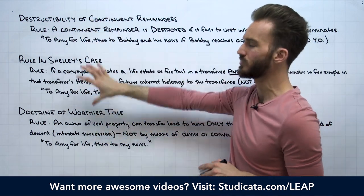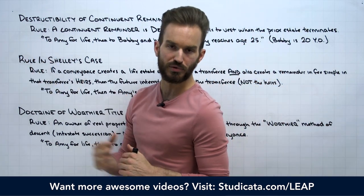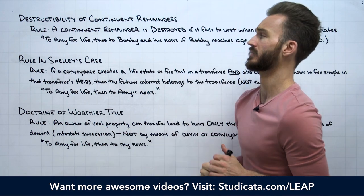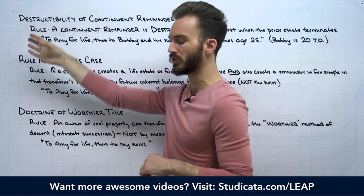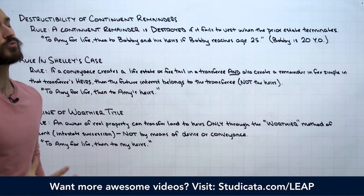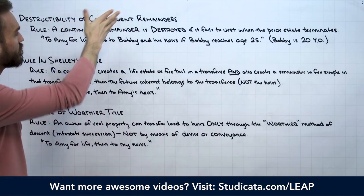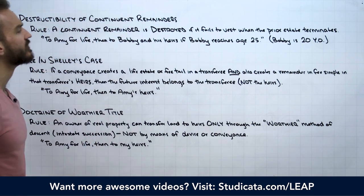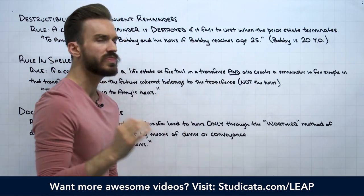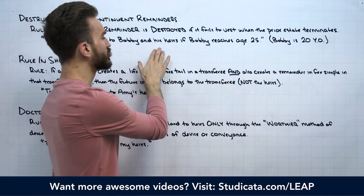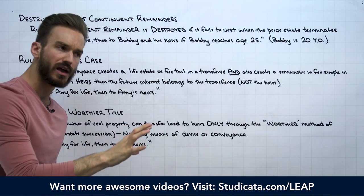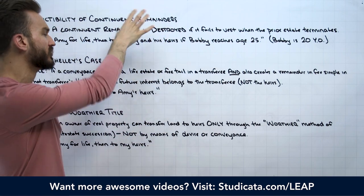These doctrines are relatively straightforward, at least compared to the rule against perpetuities. So we want to knock these out first, make sure we have these down, and then move on to our final limitation in our next lesson. We'll jump into it with the destructibility of contingent remainders. We'll go through an example and see how it would work today under a more modern approach and how it works at common law under these different doctrines.